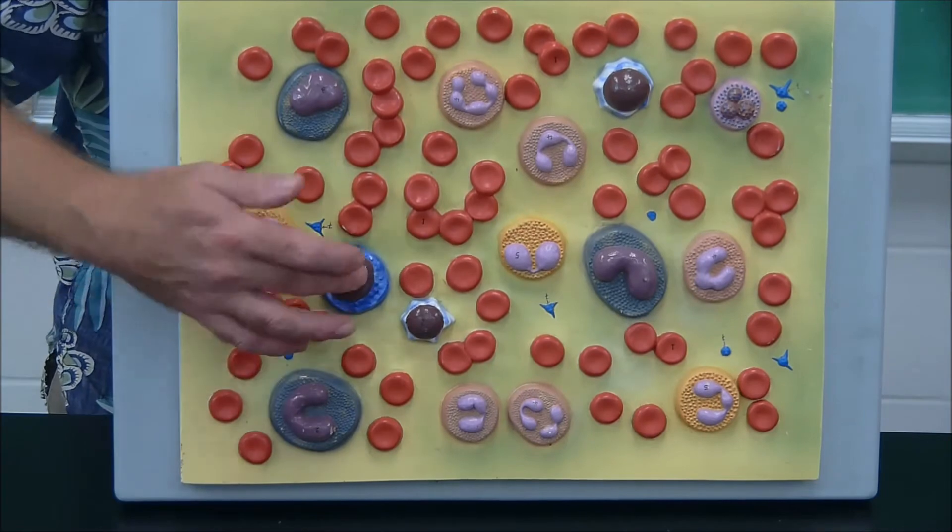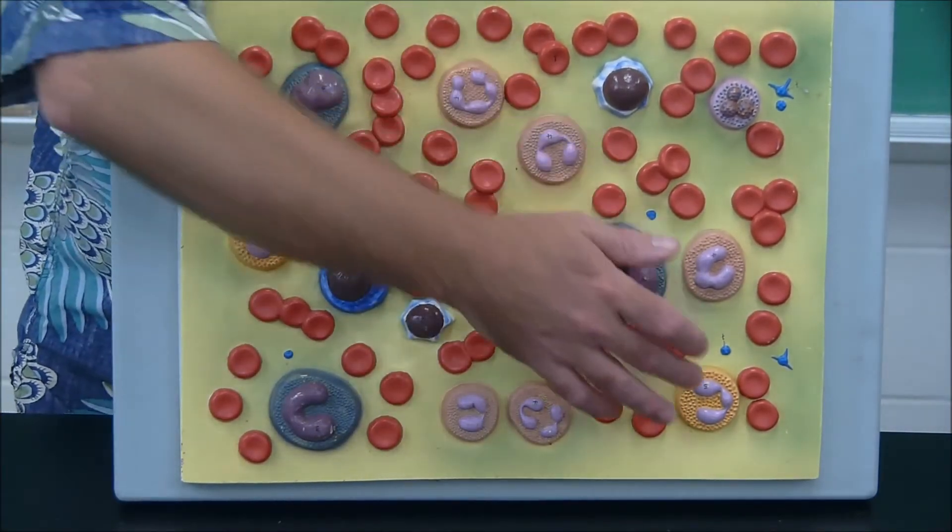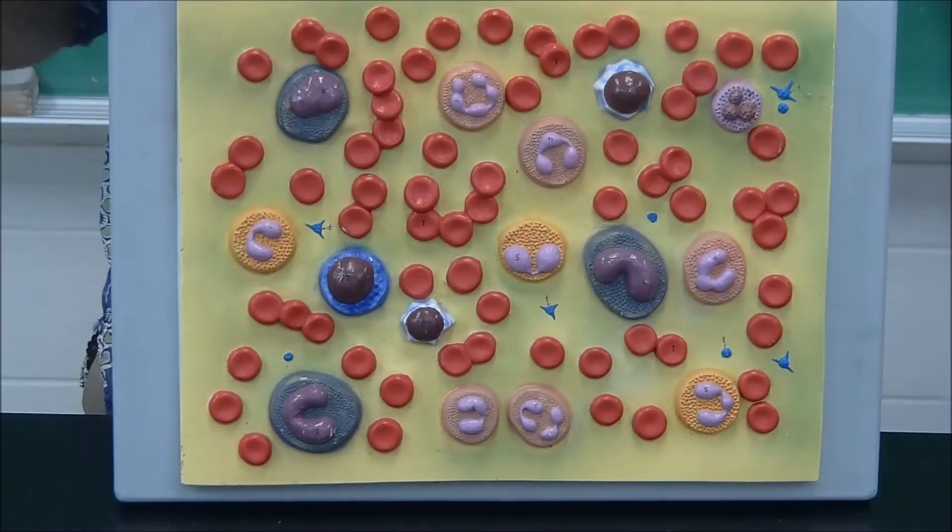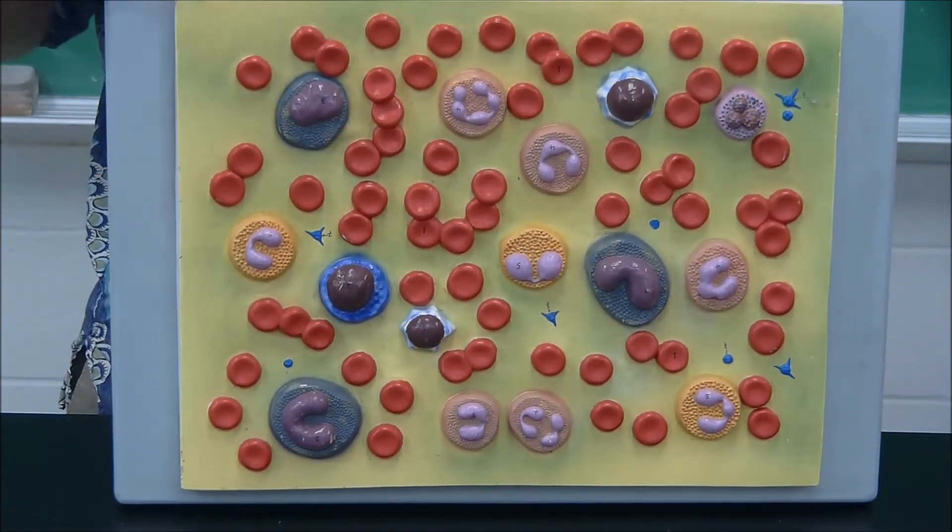So let's see, 1, 2, 3, 4, 5, 6, 7, 8, 9, 10, 11, 12, 13, 14, 15. Okay, so 15 total white blood cells here, and we're going to identify each one of them and put them into one of the five categories.